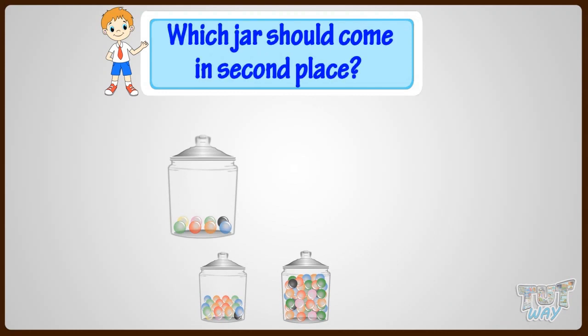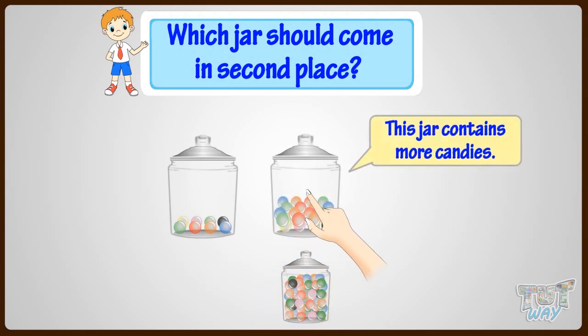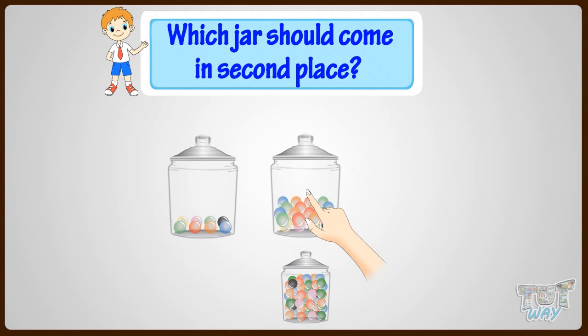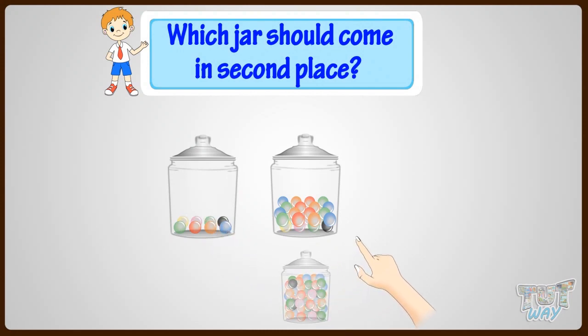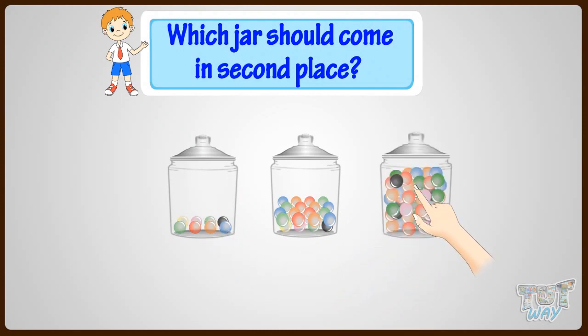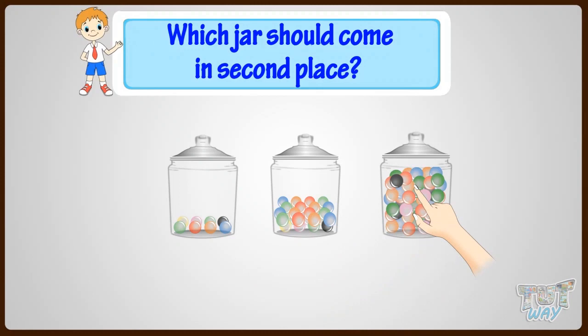Which jar should come in second place? This one? Yeah! This jar contains more candies than the jar with the least number of candies. Which jar will come last? This jar? Yes, as this jar contains the most candies. I have arranged my jars from least to most number of candies.